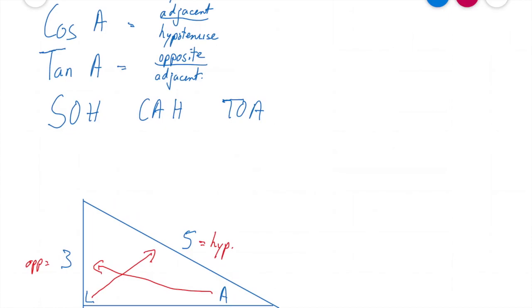Now that I've worked that out, I now need to figure out what sin A, cos A, and tan A are. So let's write this in. So sin A, I know, is my opposite over my hypotenuse.